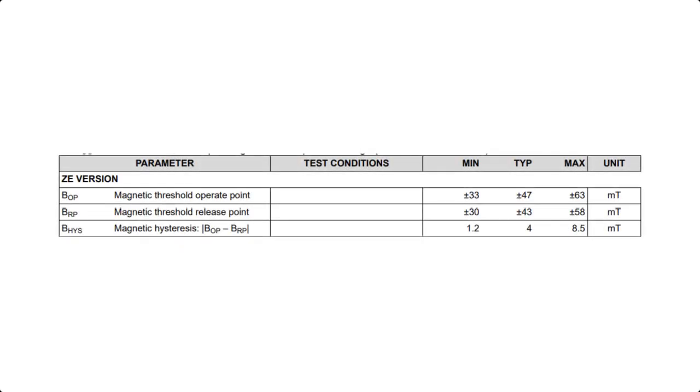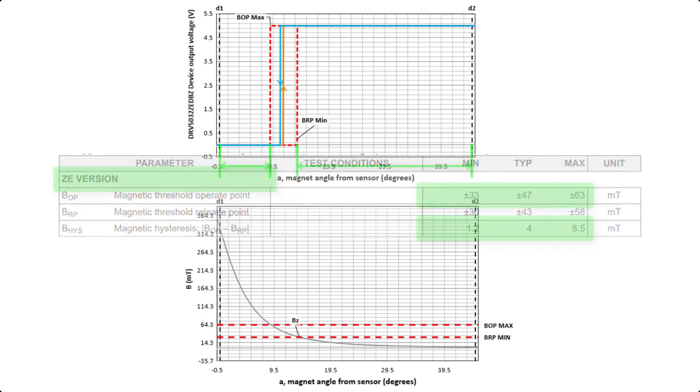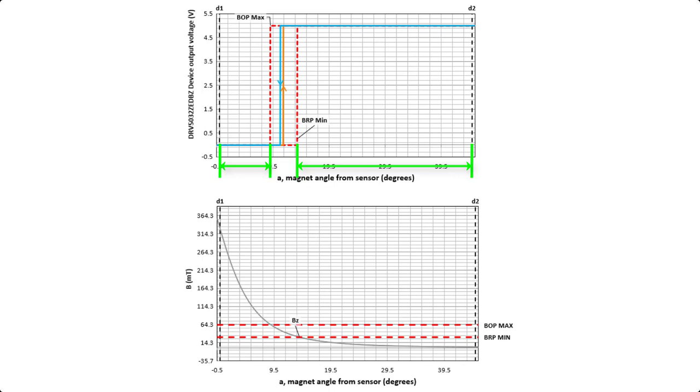Therefore, to provide even more margin, we consider the DRV5032-ZE-DBZ, which provides quite a bit of margin, an important feature when you factor in mechanical variation.